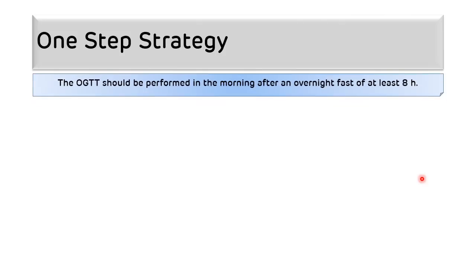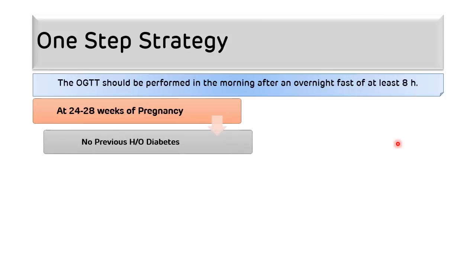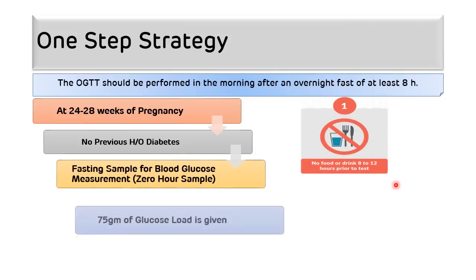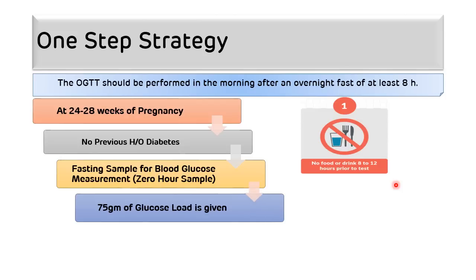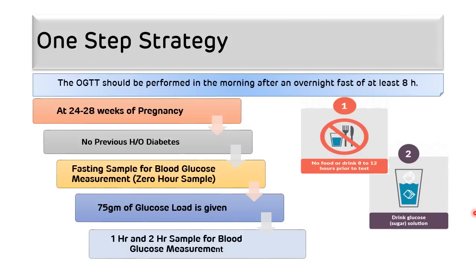In the one-step strategy, the oral glucose tolerance test is done in the morning after an overnight fast of at least eight hours, during the 24th to 28th weeks of pregnancy with no previous history of diabetes. A fasting blood sample is collected as the zero-hour sample. Then 75 grams of glucose is given to the patient slowly to avoid vomiting, and blood samples for glucose measurement are collected at one hour and two hours.